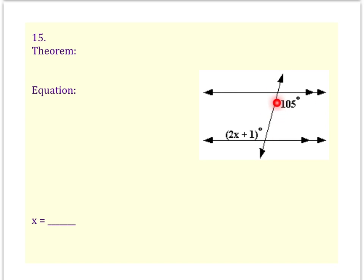The 105 degrees is on the right-hand side of my transversal and underneath the parallel line. The expression 2x plus 1 is on the left side of the transversal, inside the parallel line. They're on alternate sides of the transversal inside the parallel lines, so that makes them alternate interior angles.